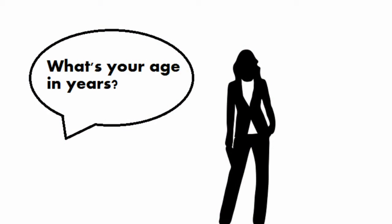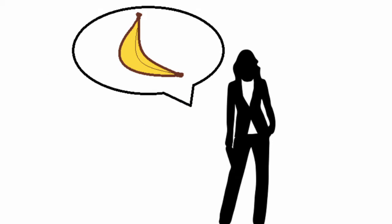Hey SuperCoders! When we write software, people tend to use it in pretty unexpected ways. For example, if you ask someone what their age is in years, nothing stops them from saying something silly like banana.